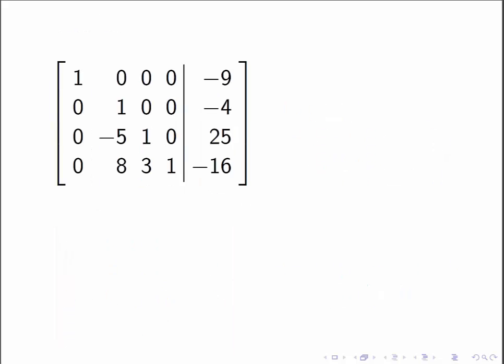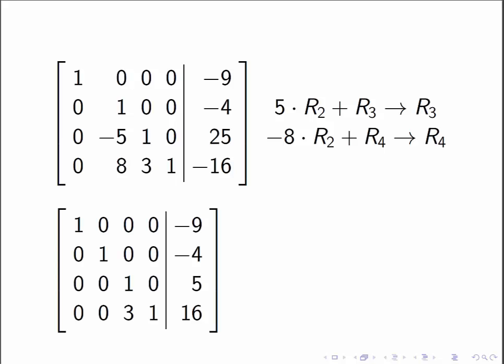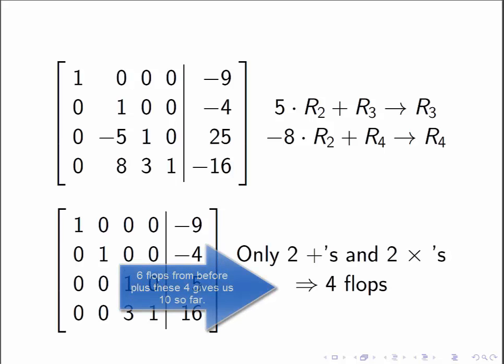Then we move on to the next step. I want to use this value of 1 in order to make zeros below that. I know that those entries will end up being zero. Since these two entries are zero, I don't need to do any of the computation on those two columns. I only need to do the row operations on this last column. So my row operations would be 5 times row 2 plus row 3 and negative 8 row 2 plus row 4. That's going to give me this result, and since I only did the row operations on the last column, I've only done two additions and two multiplications, which is four floating point operations.